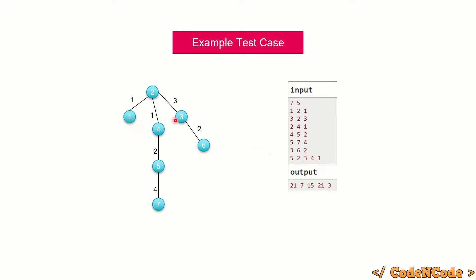For example, pair one-three is invalid because the simple path between them goes through edge two-three, which has a weight greater than qi. So basically, find the number of pairs such that the simple path between them does not contain any edge with weight greater than qi. That is the problem statement.